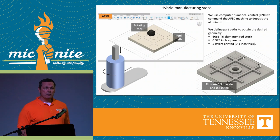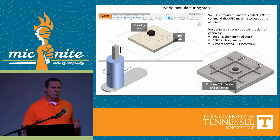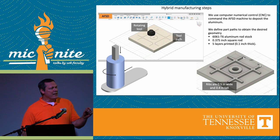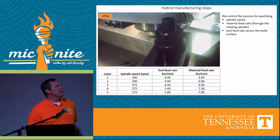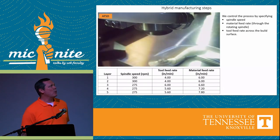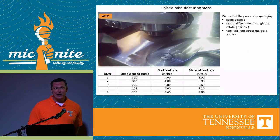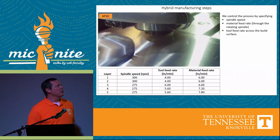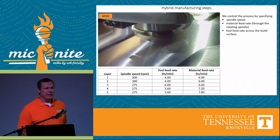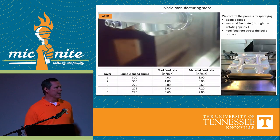We have to use computer numerical control to position that tool relative to the workpiece. So we have commands that we give to the machine in order to deposit the material to get the desired geometry. This shows a video of that deposition process — it's eight times faster than real time — where we're putting material down in aluminum layer by layer in order to arrive at that preform geometry that we want.